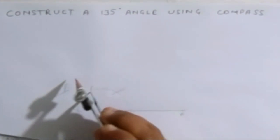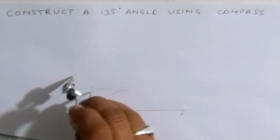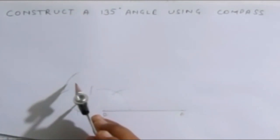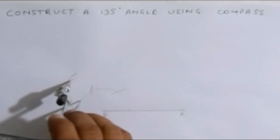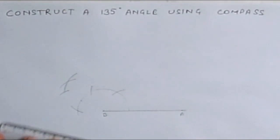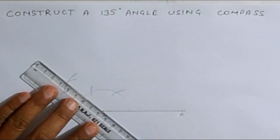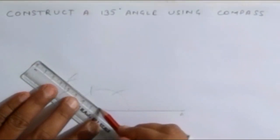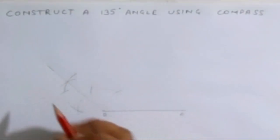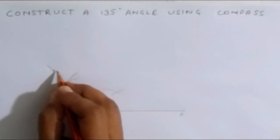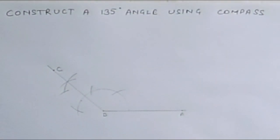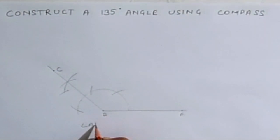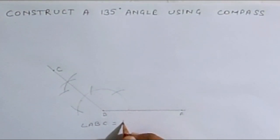Again bisect it from here and join it. Mark it point C. Angle ABC is equal to 135 degree.